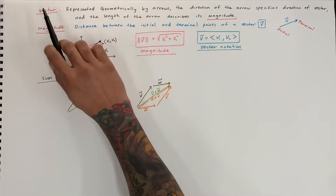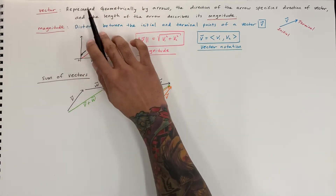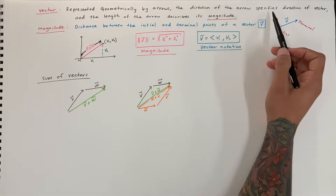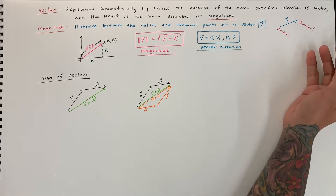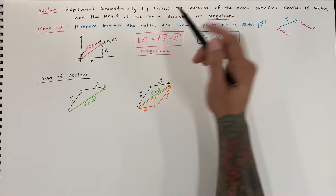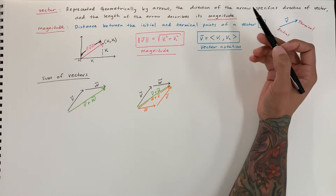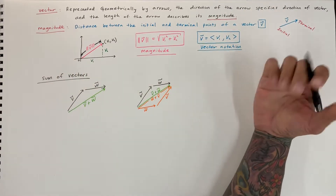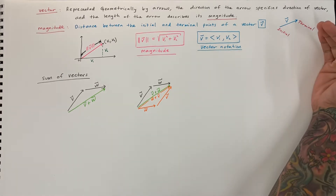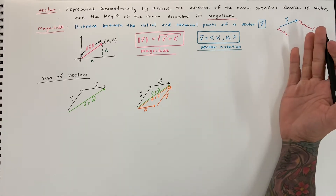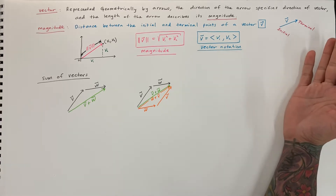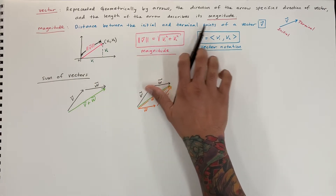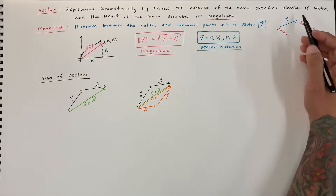So we have some definitions here. What is a vector? A vector is represented geometrically by arrows. The direction of the arrow specifies the direction of the vector, and the length of the arrow describes its magnitude. The magnitude is the distance between the initial and the terminal points of a vector.